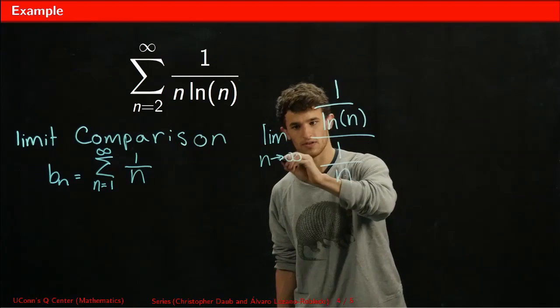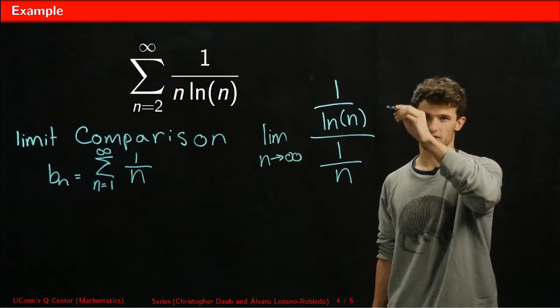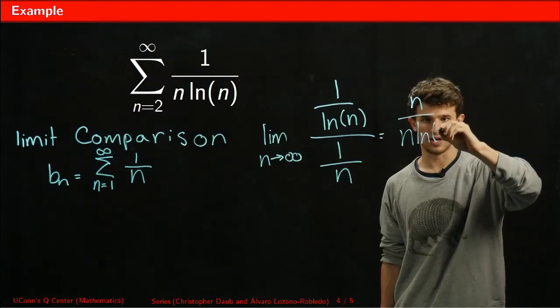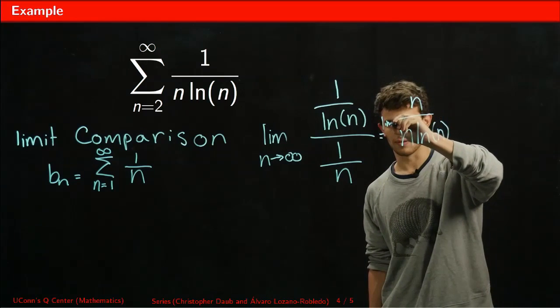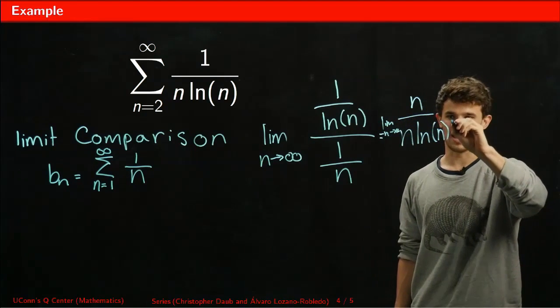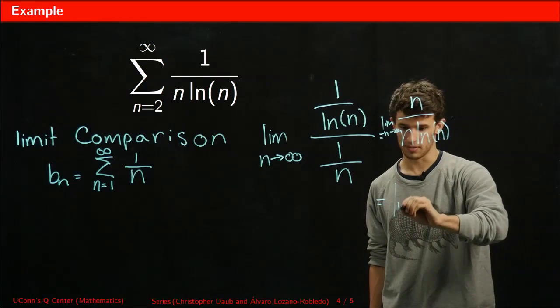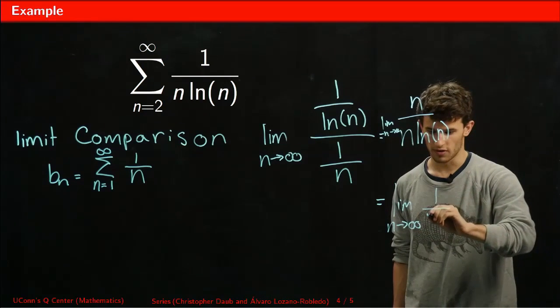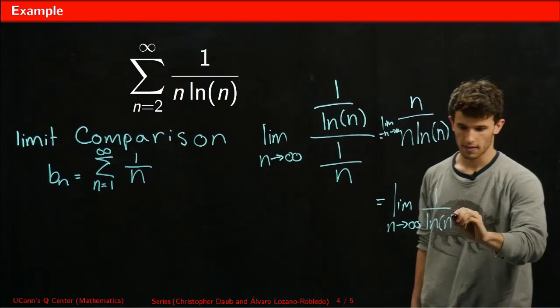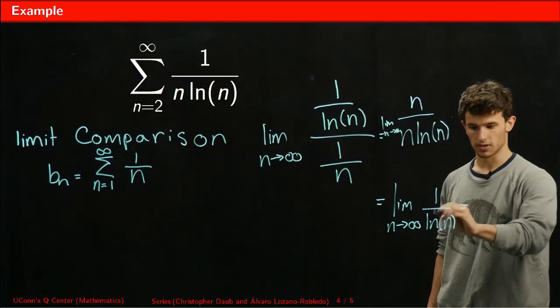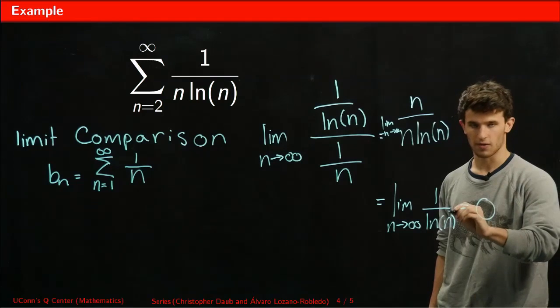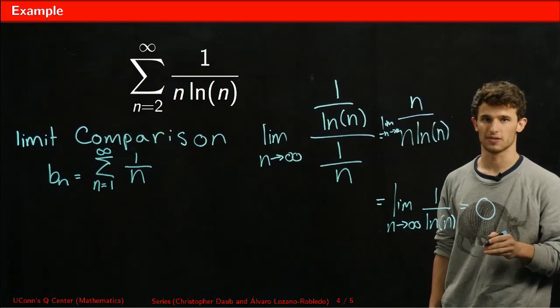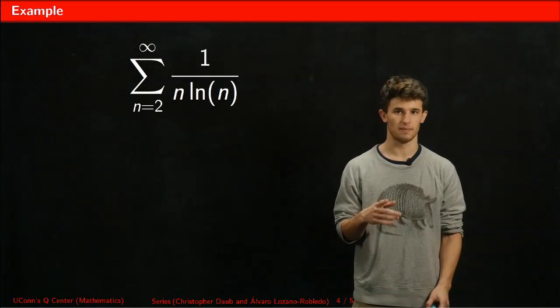As n goes to infinity, by division of fractions, we get n over n ln(n). Then we get the limit as n goes to infinity of 1 over ln(n). This equals 0 since ln(n) is an increasing function. We can neither conclude that this diverges or converges from our limit comparison test. The limit comparison test failed.